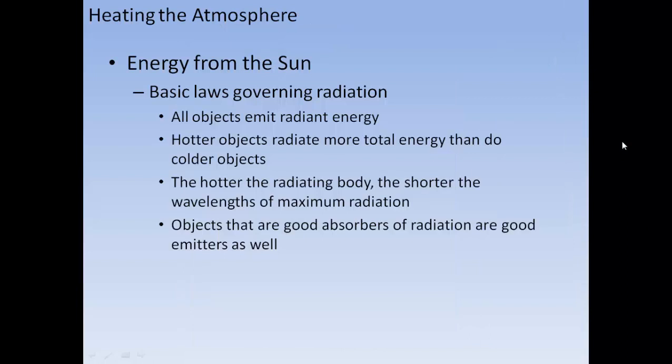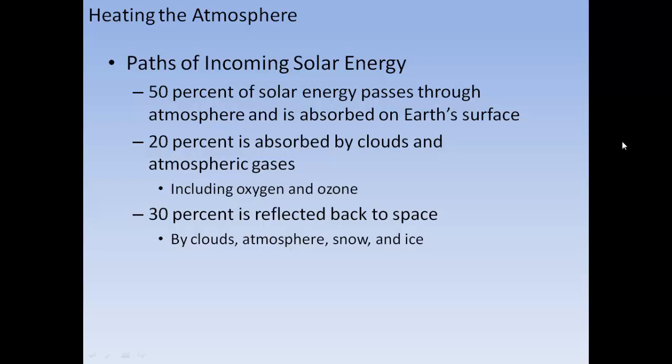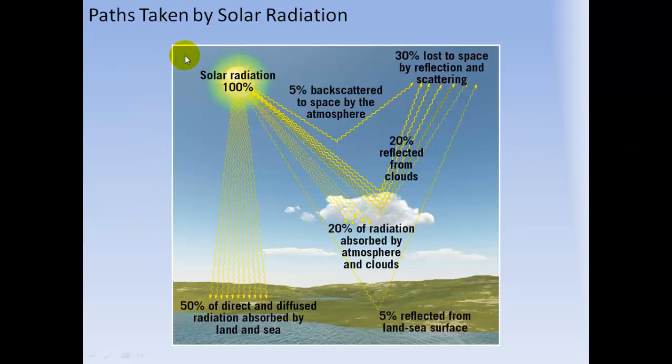Basic laws govern radiation: all objects emit radiant energy; hotter objects radiate more total energy than colder objects; the hotter the radiating body, the shorter the wavelength of maximum radiation; and objects that are good absorbers of radiation are also good emitters. 50% of solar energy passes through the atmosphere and is absorbed at Earth's surface, 20% is absorbed by clouds and atmospheric gases including oxygen and ozone, and 30% is reflected back to space by clouds, atmosphere, snow, and ice.